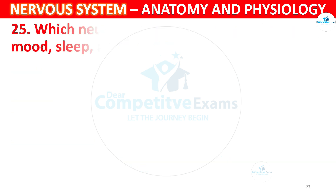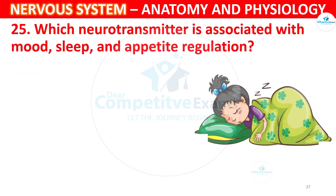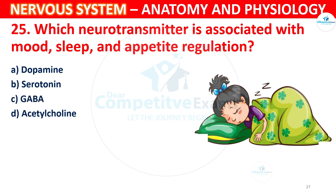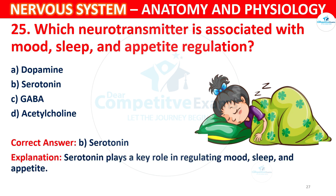Question 25: Which neurotransmitter is associated with mood, sleep, and appetite regulation? Options: A) Dopamine, B) Serotonin, C) GABA, D) Acetylcholine. The correct answer is B, Serotonin. Serotonin plays a key role in regulating mood, sleep, and appetite.